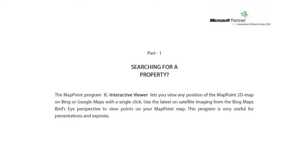Part 1: Searching for a Property. The MapPoint program IC Interactive Viewer lets you view any position of the MapPoint 2D map on Bing or Google Maps with a single click. Use the latest satellite imaging from the Bing Maps bird's eye perspective to view points on your MapPoint map. This program is very useful for presentations and exposés.